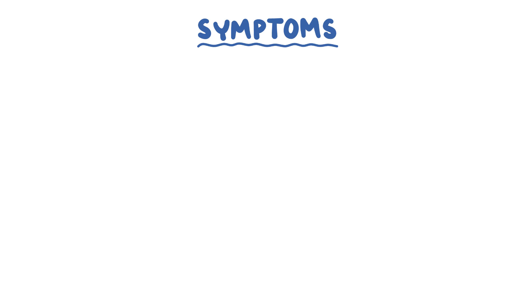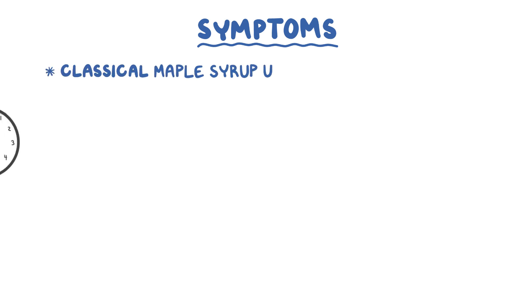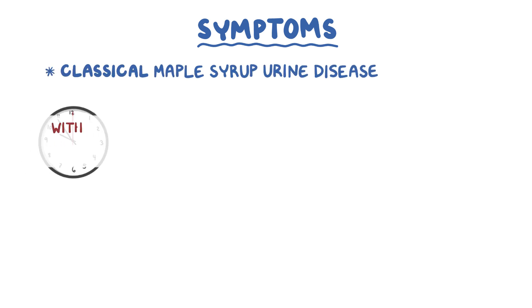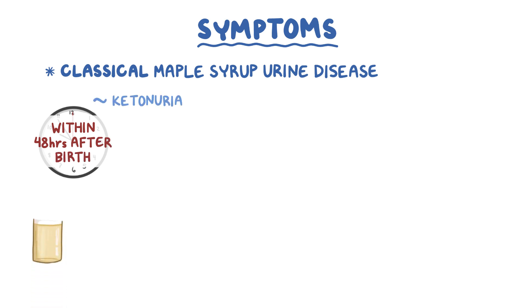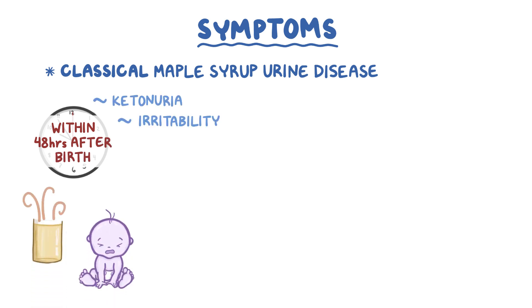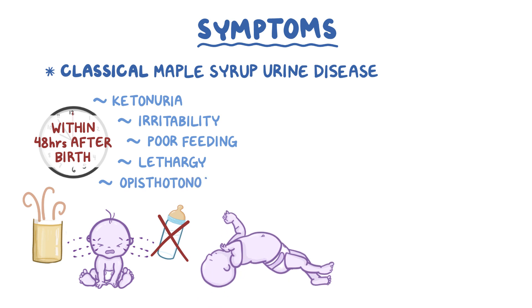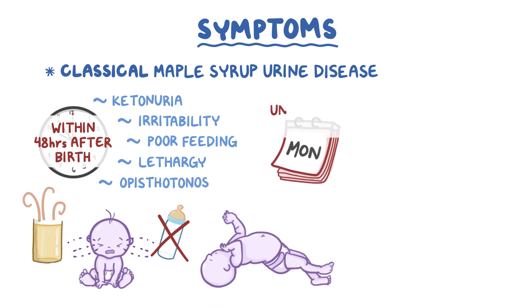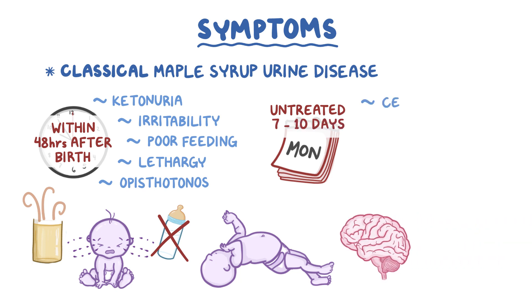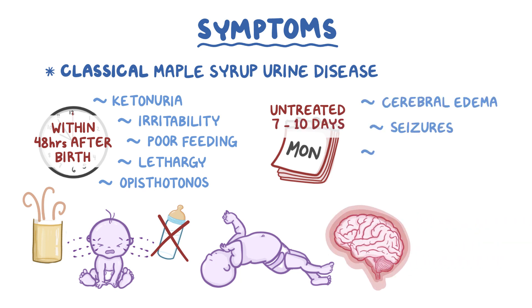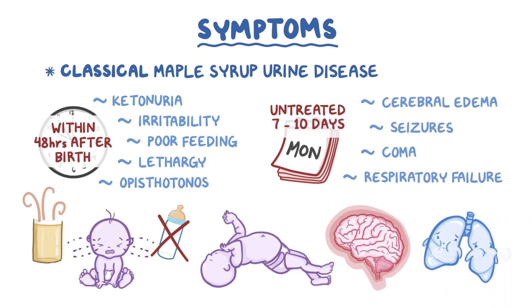Symptoms differ based on the form of disease. In classical maple syrup urine disease, symptoms appear within 48 hours after birth. These include ketonuria with sweet-smelling urine, irritability, poor feeding, lethargy or sleepiness, and muscle spasm called opisthotonos, which looks like bicycling movements. If untreated within 7 to 10 days, cerebral edema, seizures, coma, and respiratory failure can occur.